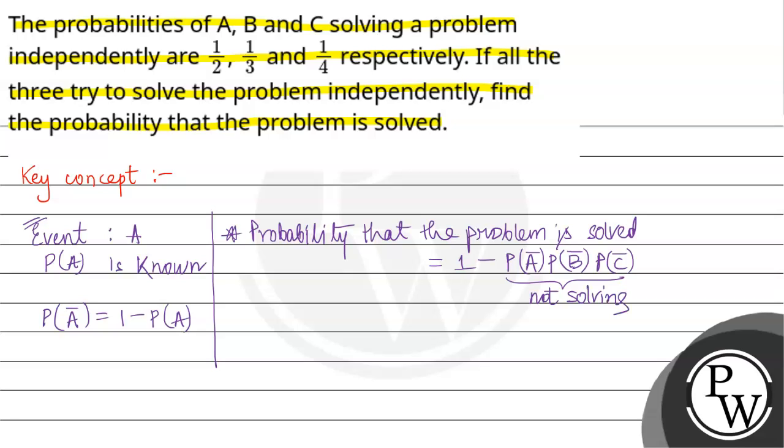1 minus not solving. With the help of this key concept, we will solve the problem. Now, let A, B, C denote the events that the problem is solved by A, B, C respectively.